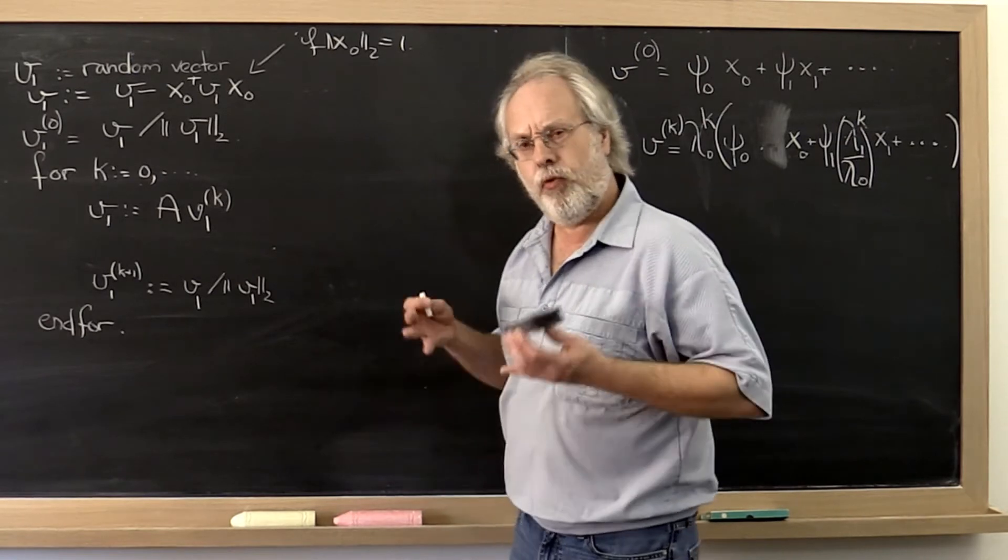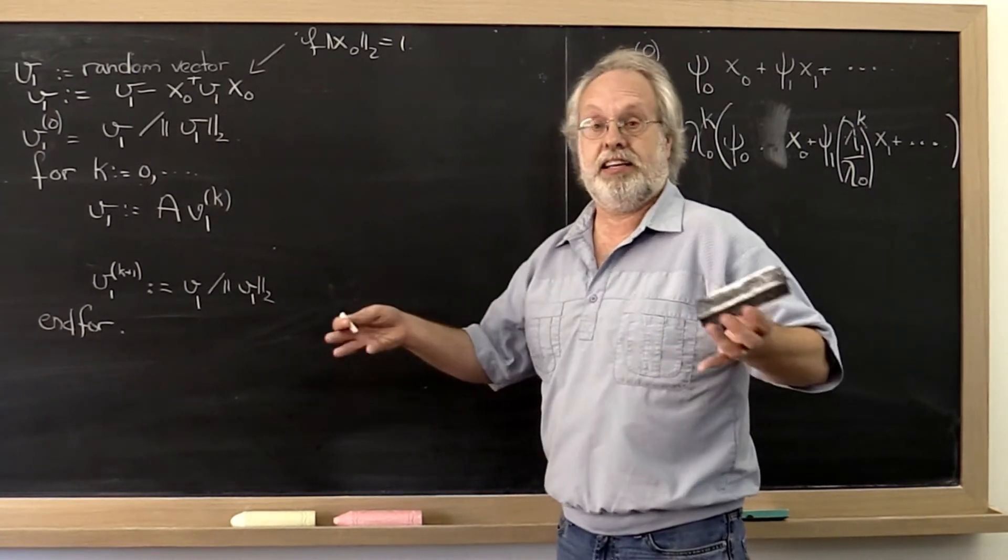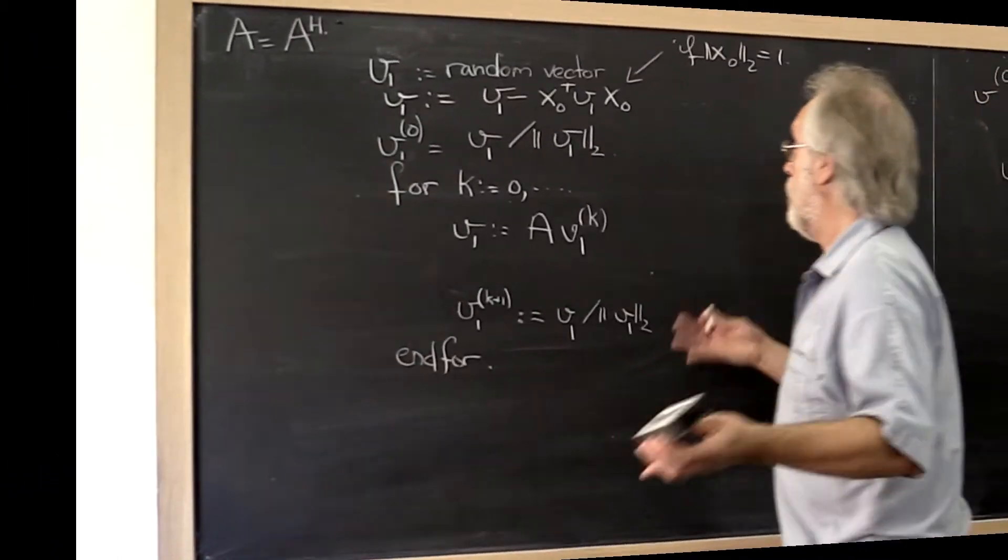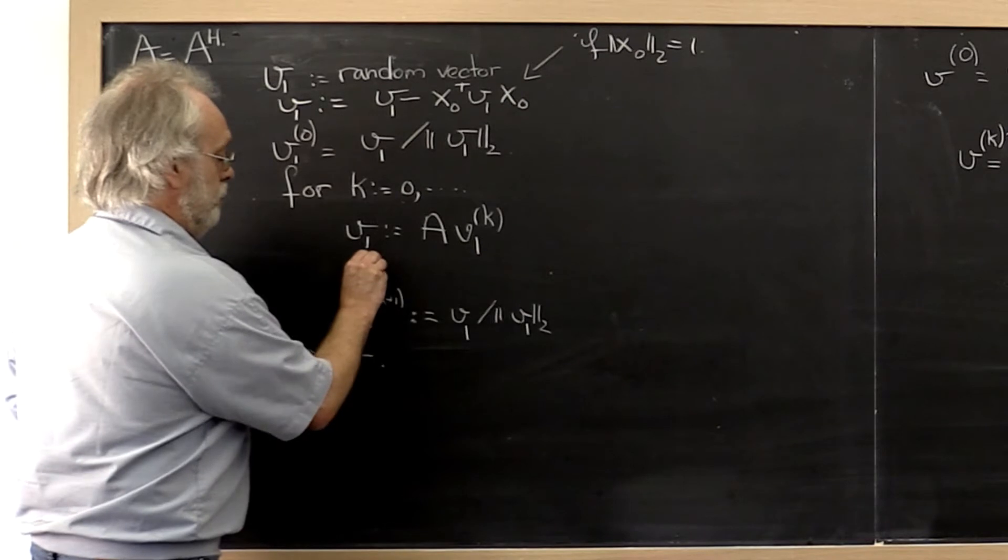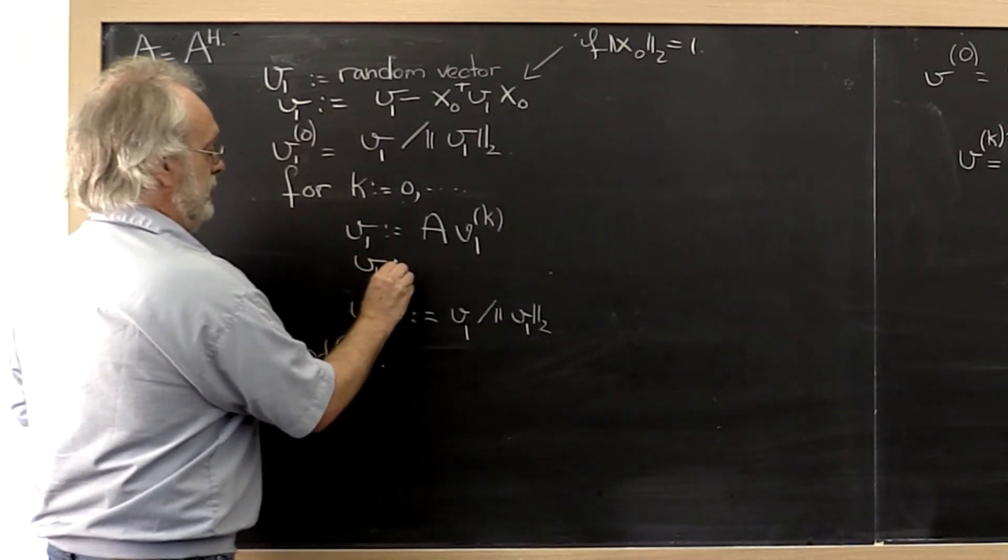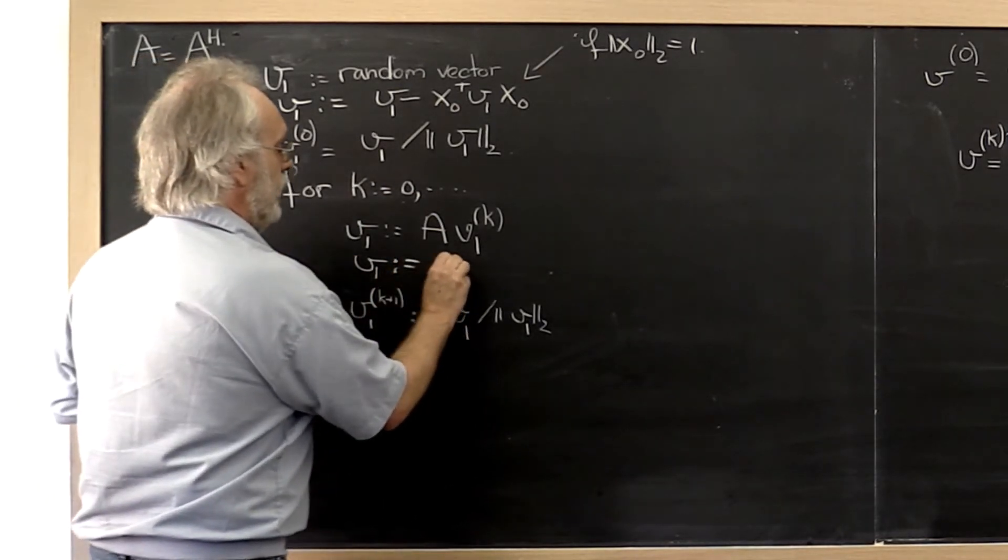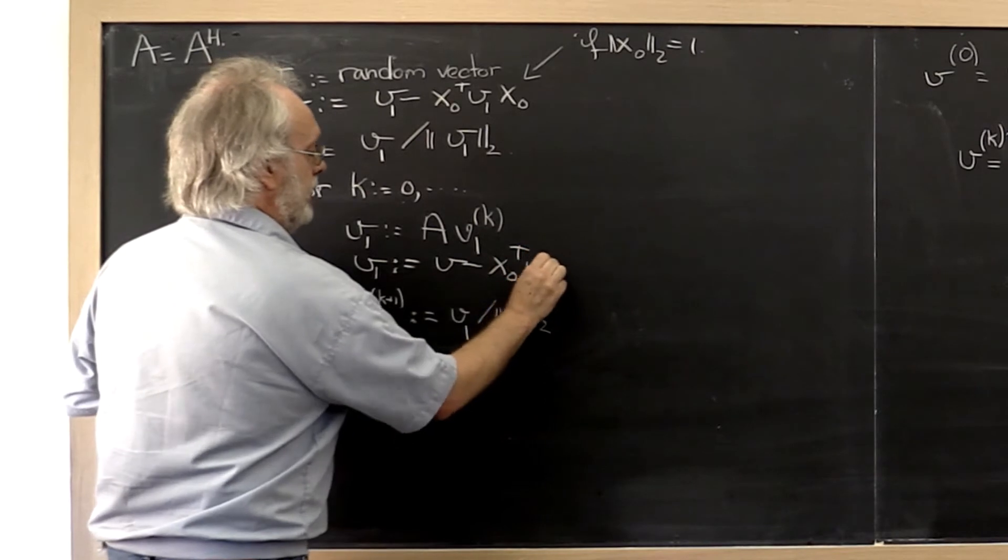So how can we then force that component out every time? Well, I guess I kind of gave it away. We can force that component out every time. Before we normalize this vector, let's go ahead and be diligent and subtract out again any component in the direction of x0 that has snuck in.